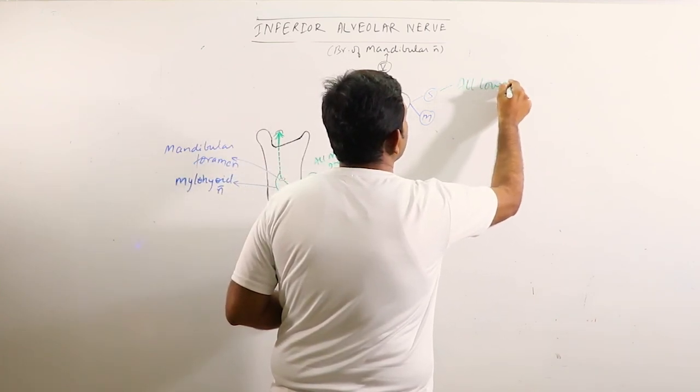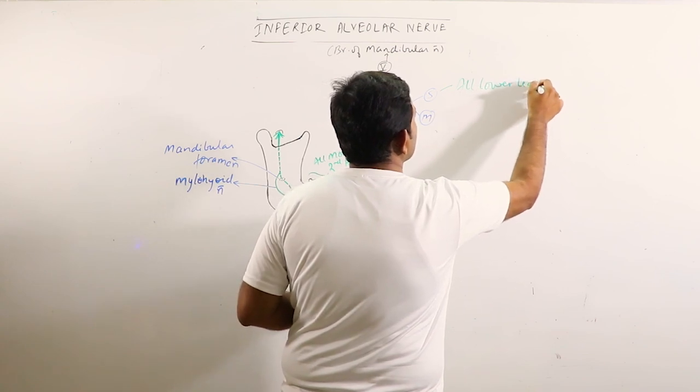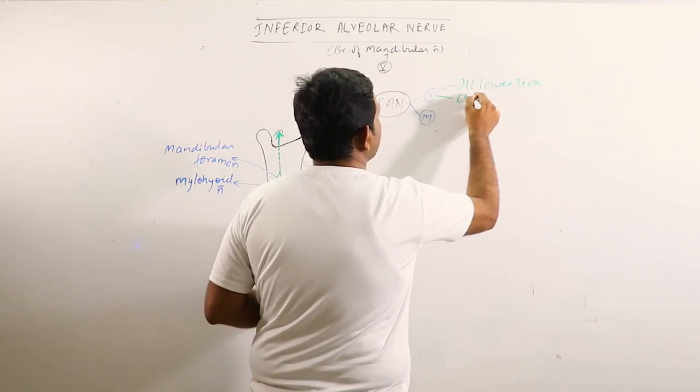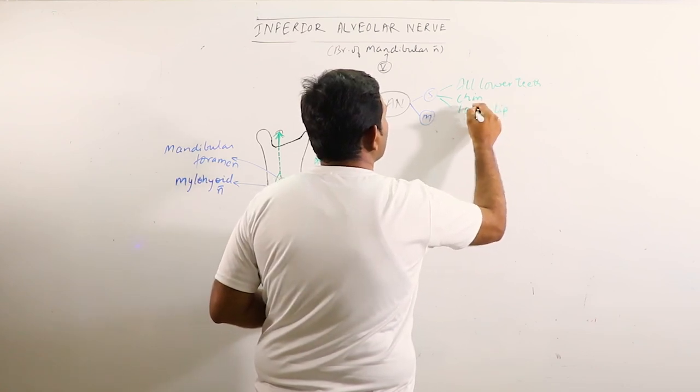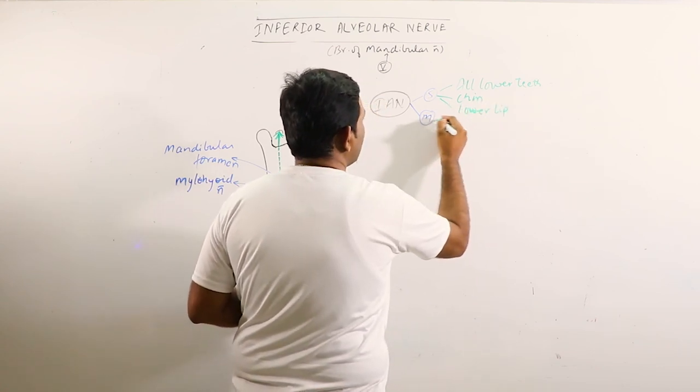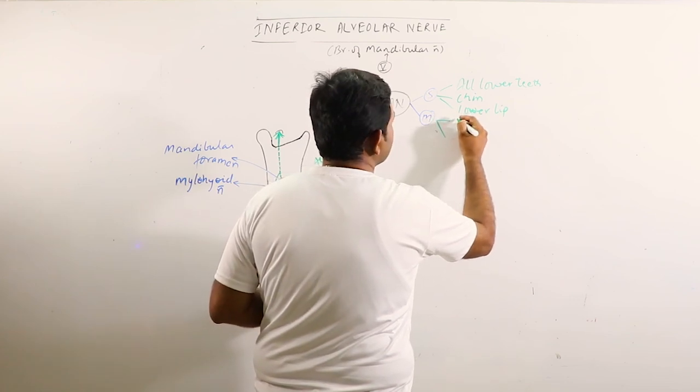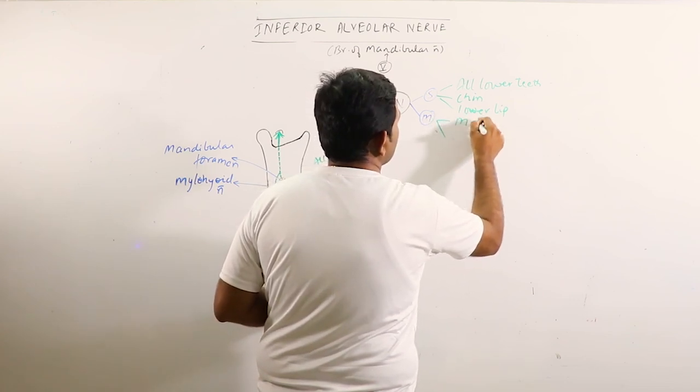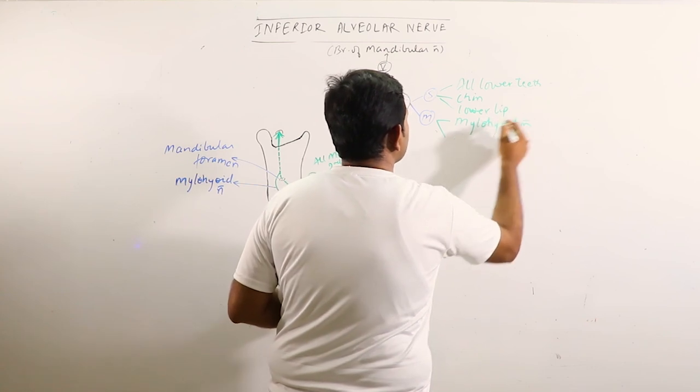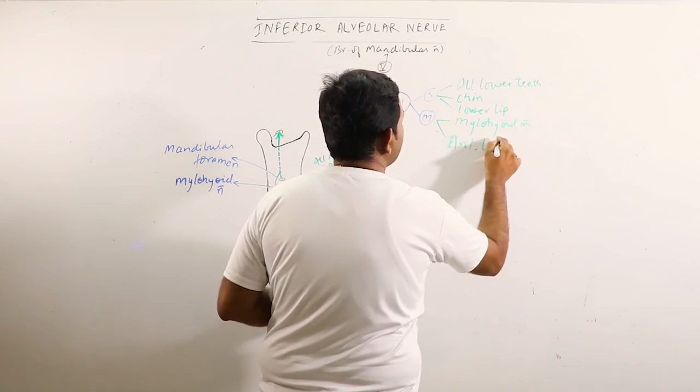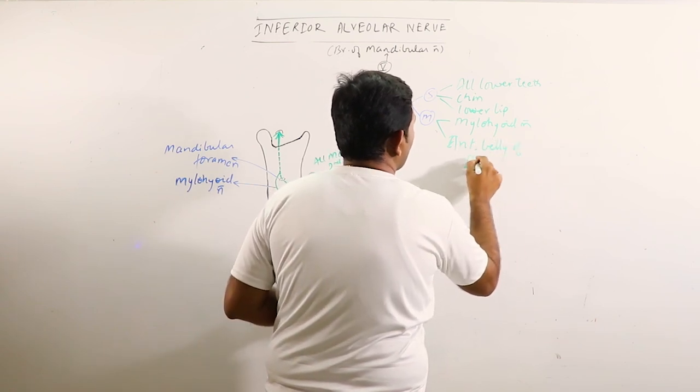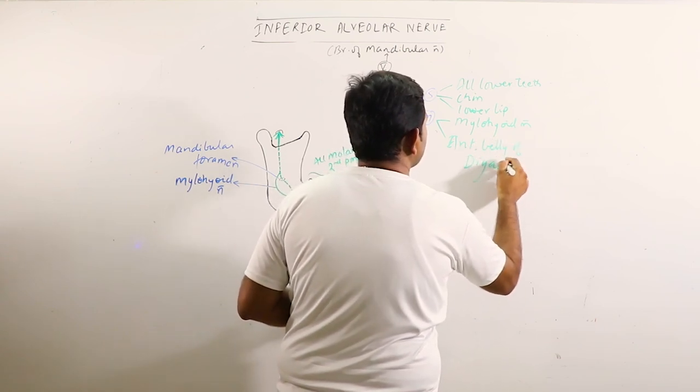All lower teeth, chin and lower lip, while the motor supply is given to the muscles, the mylohyoid muscle and the anterior belly of the digastric muscle.